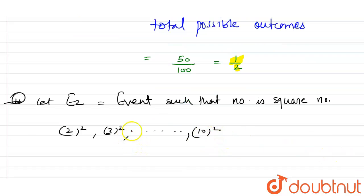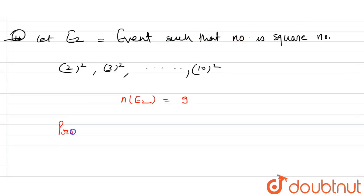So if we see 2 square, 3 square, 4 square, 5 square, it goes up to 10 square. So number of terms are 9. These are the favorable outcomes. So the probability that the numbers are square number is 9 by 100. This is our answer.